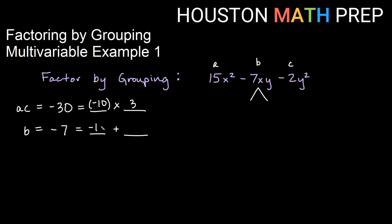Negative 10 times 3 would give us negative 30, and negative 10 plus 3 will give us negative 7. So the magic numbers that we'll regroup are negative 10 and positive 3.